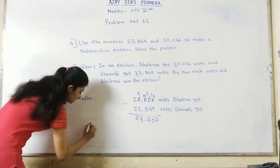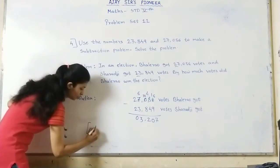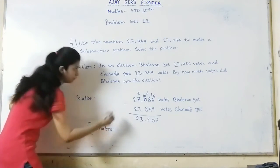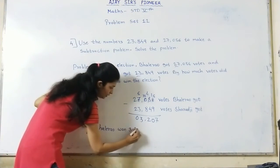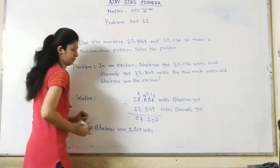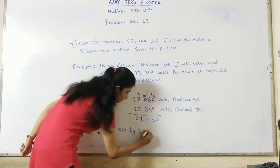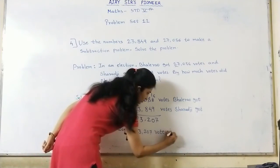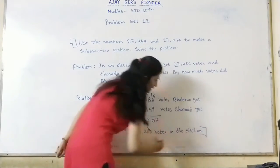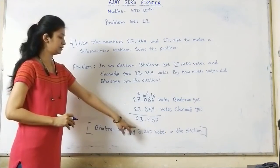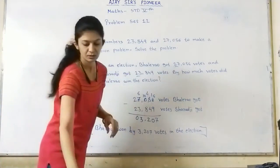Our main answer, our statement is: How much votes did Bhalerao win the election by? Bhalerao won by 3,207 votes in the election. Full stop and bracket complete. So write down this last question.